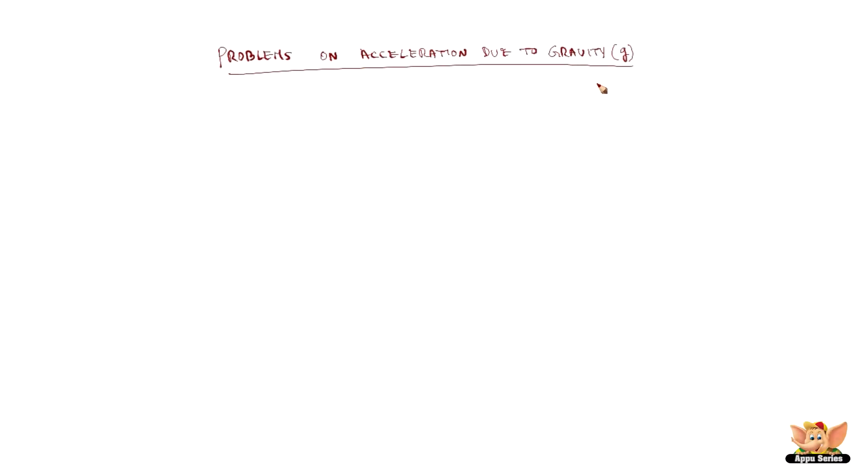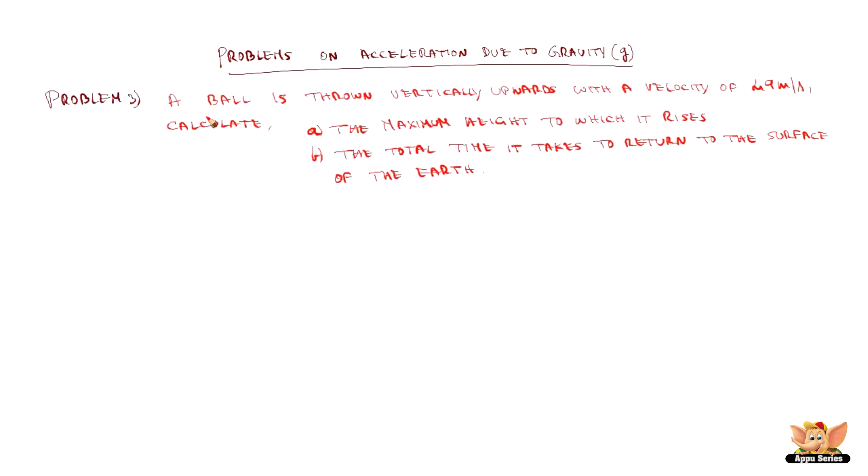Problems on acceleration due to gravity. A ball is thrown vertically upwards with a velocity of 49 meters per second. Calculate the maximum height to which it rises and the total time it takes to return to the surface of the earth.